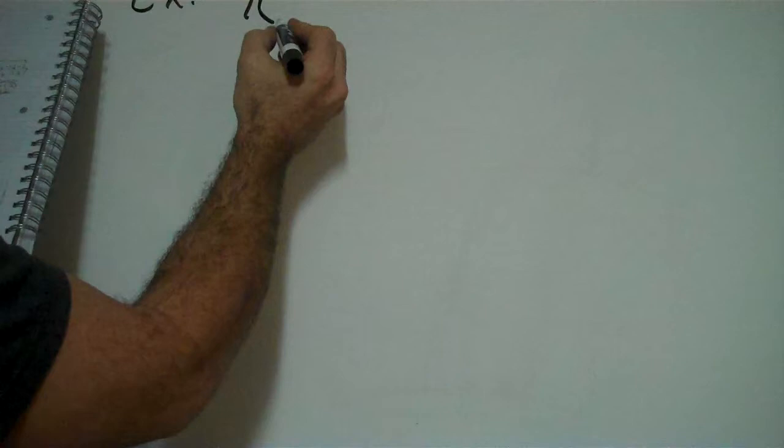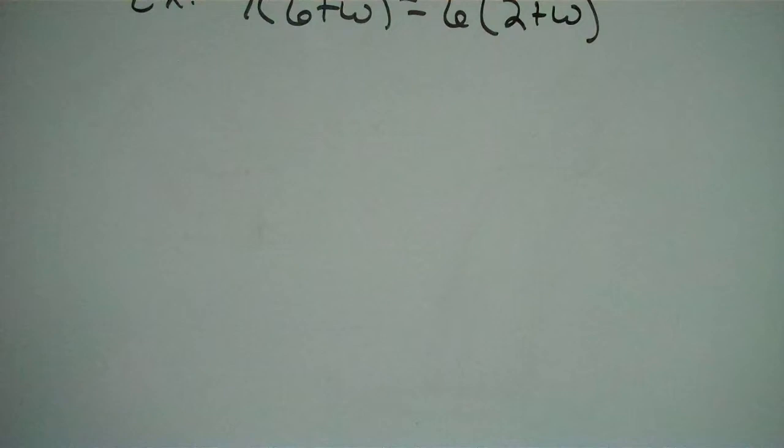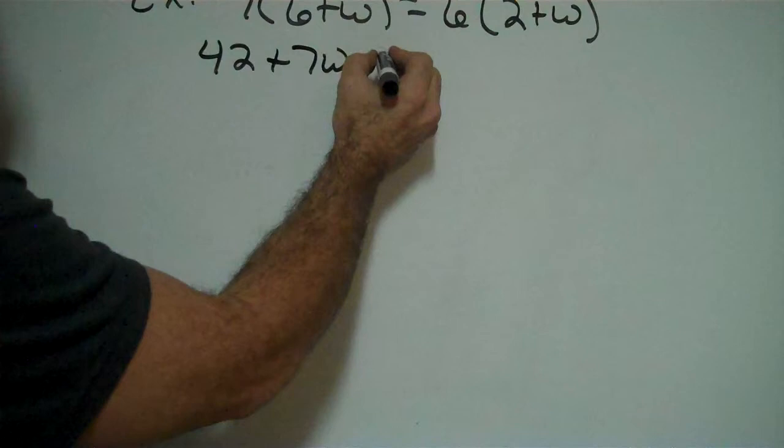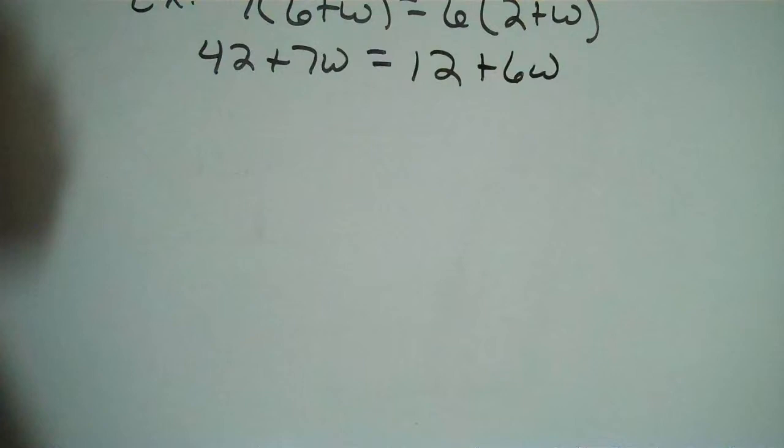Alright, next example. I got 7 times 6 plus w on one side equal to a 6 times 2 plus w. So watch what I do. I want to get rid of these parentheses by multiplying by that 7. 7 times 6 is 42. 7 times w is 7w. That's equal to the right side when I distribute. I multiply the 6. 6 times 2 is 12. 6 times w is a 6w.